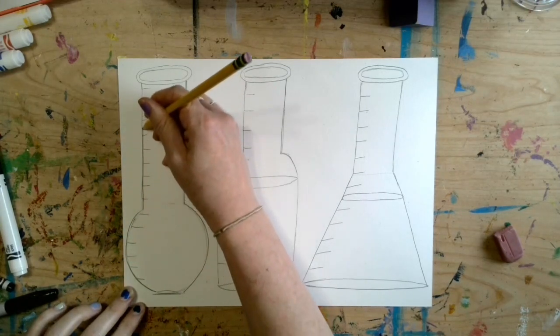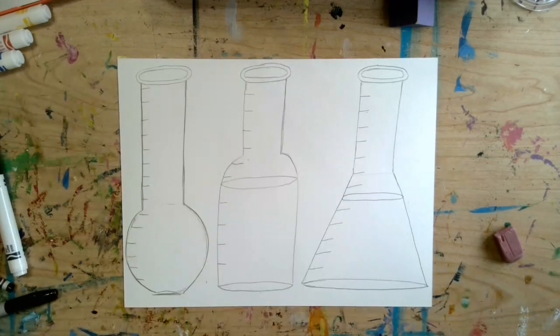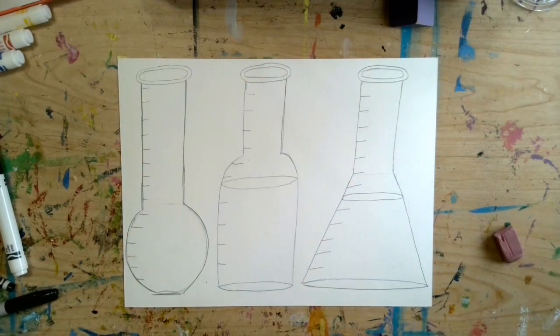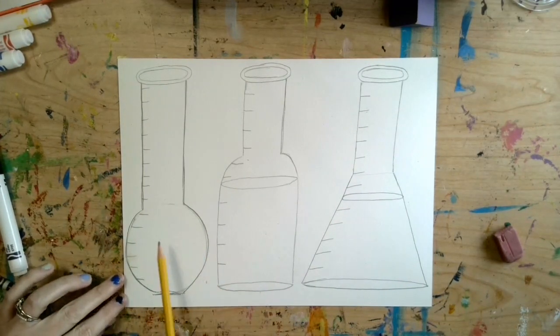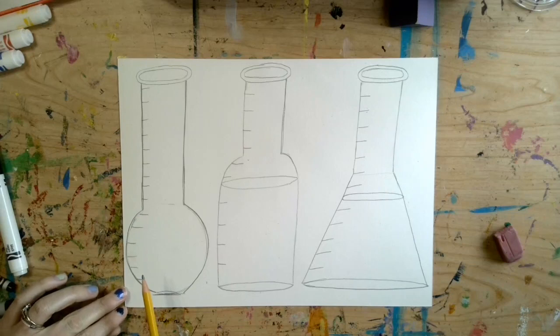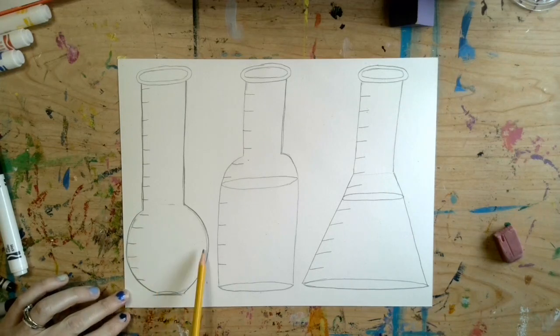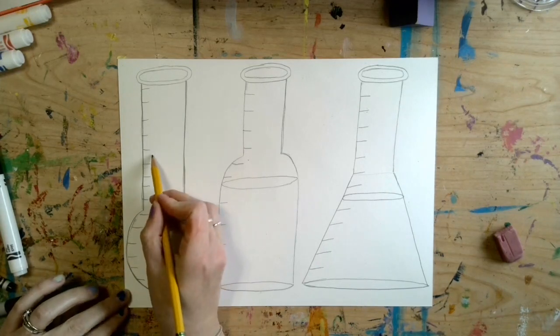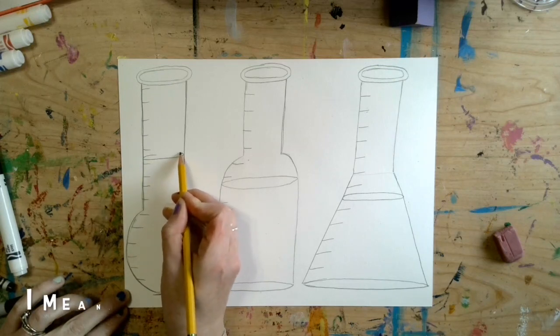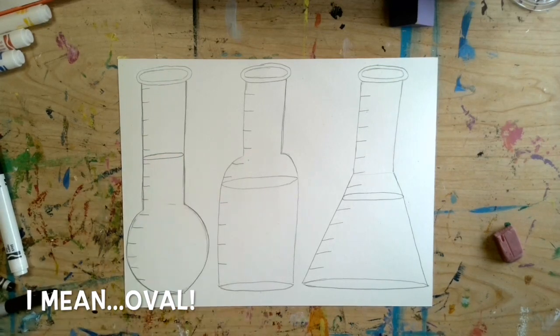Now this beaker also needs to be holding in some liquid, so we can just have a small amount of liquid at the bottom, or maybe they filled it up into the neck this time. So I'm going to draw a little skinny rectangle in the neck of my bottle.